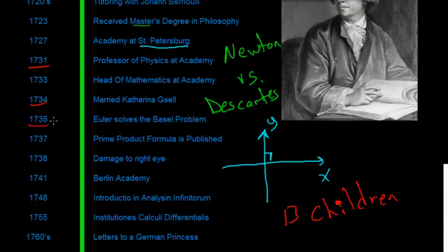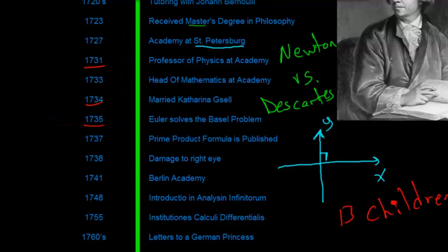So, like I said at the end of the last video, in 1735, Euler solves the Basel problem. I've actually made an entire video on how he actually solves the problem, but I'll give you the general idea right here. So, the problem, as stated, is pretty simple to understand.